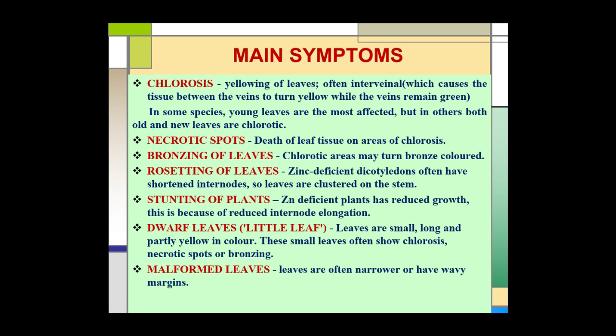Stunting of the plant occurs because zinc-deficient plants have reduced growth due to reduced internode elongation. Other symptoms include dwarf leaves, also known as little leaves — the leaves are small, narrow, and partially yellow in color, often showing chlorosis, necrotic spots, or bronzing. Leaves may also be malformed, often narrower or having a wavy margin.